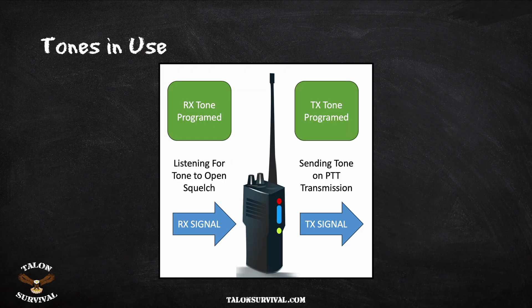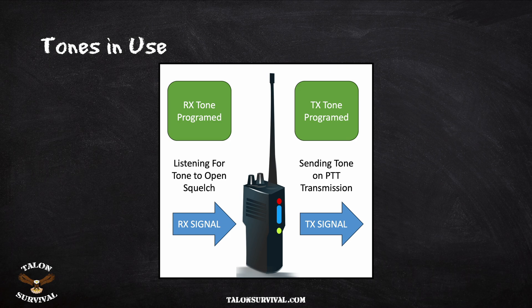So let's talk about how tones are actually used. The most important element when using tone-coded squelch is generally going to be the transmit tone. When you add a tone into your radio on the transmit side, it sends that tone when you press the PTT — push-to-talk — button and start transmitting. Radios or repeaters listening for that tone will hear it, activate the speaker so you're heard, or activate the repeater so your transmission is repeated.